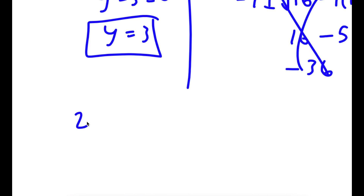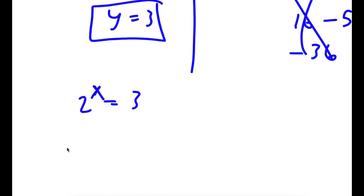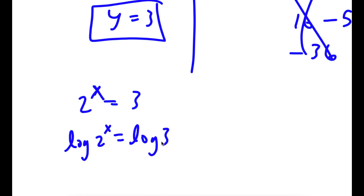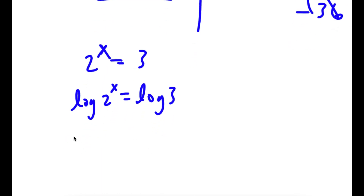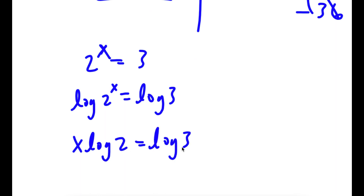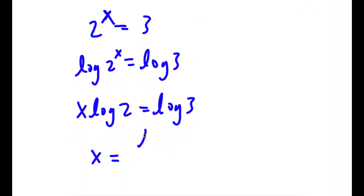Remember how we let 2 to the power of x equal y, meaning 2 to the power of x equals 3. To solve this, I'm going to take the log on both sides. This gives x times log 2 equals log 3, meaning x is equal to log 3 over log 2.